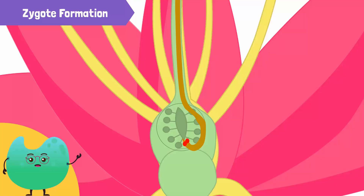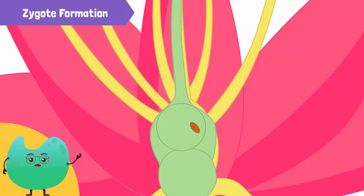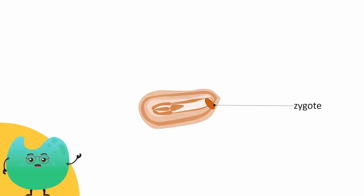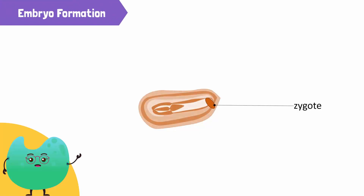One of the male gametes fuses with a female gamete and forms a zygote. A zygote is a combination of a male and female gamete. The zygote divides many times before forming an embryo.